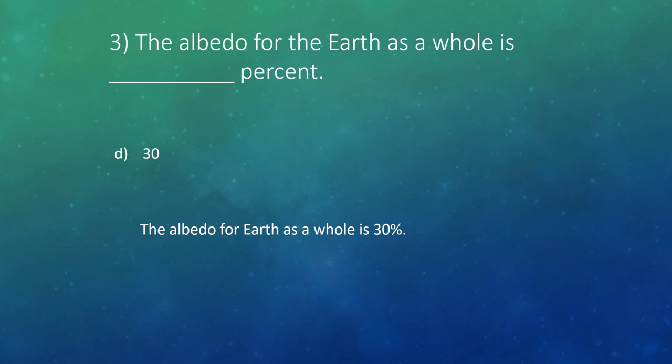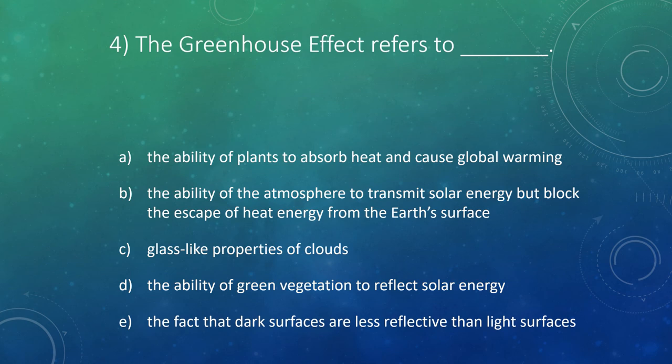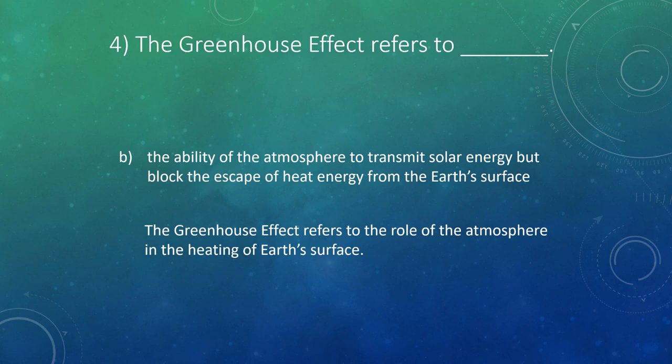Question four: the greenhouse effect refers to the ability of the atmosphere to transmit solar energy but block the escape of heat energy from the Earth's surface. This is the greenhouse effect, and this is the conclusion of this lecture. Thanks for watching, and have a fantastic day.